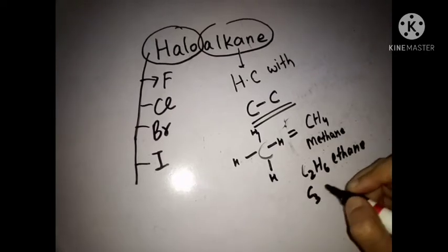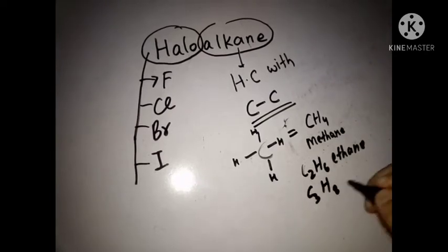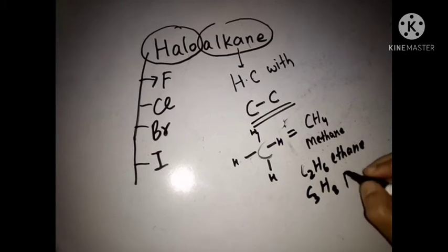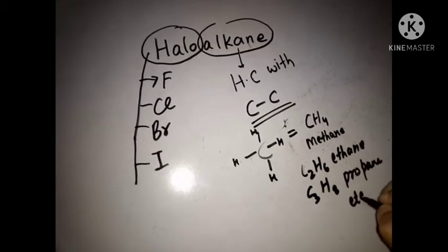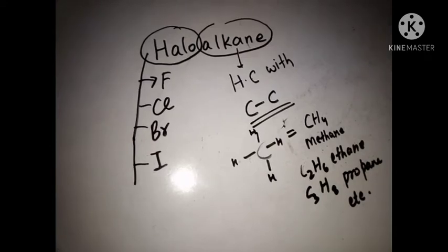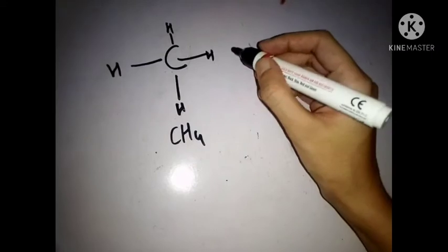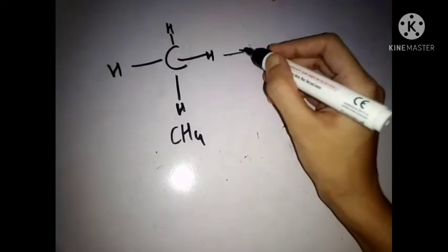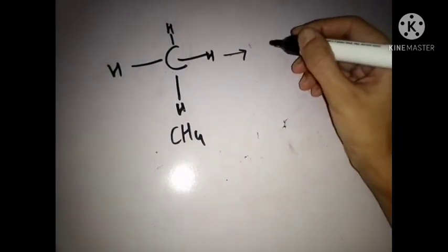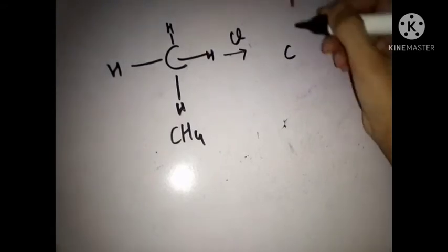Then next member is C3H8 propane, and it is the third member of alkane series. So whenever we combine an alkane with halogen, the compound formed is known as haloalkane.